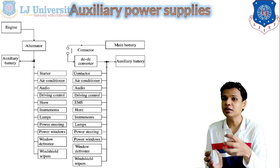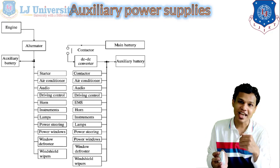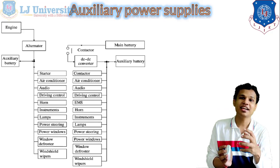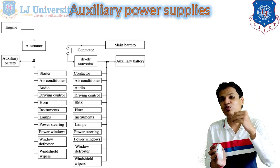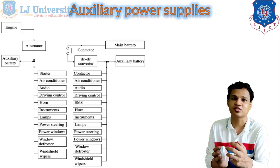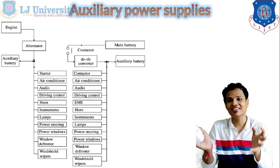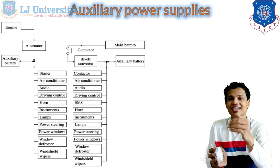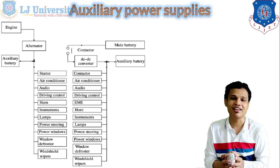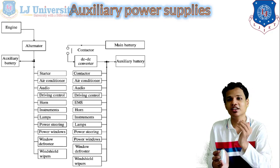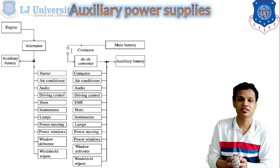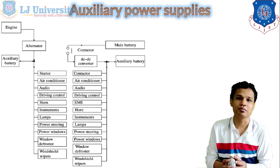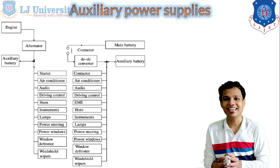Window defrosting will be done with the help of our normal air conditioning system as well. When the air conditioning is kept running it will work as a defroster — it will not let the windows frost, and the driver's view will remain clear with the help of the air conditioning system. So these are the basic auxiliary power supplies for our electric vehicle.